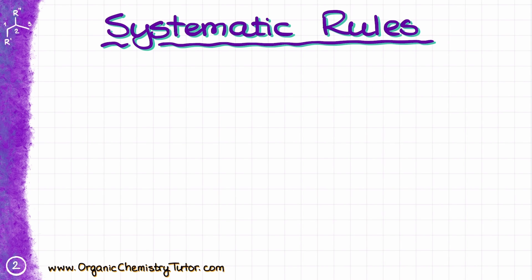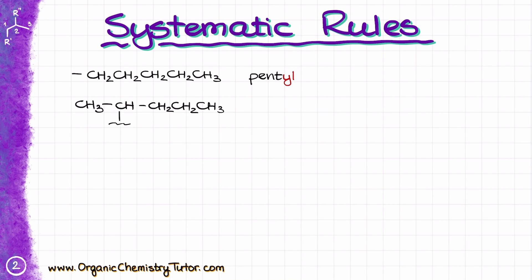So what do we do for something with five carbons or more? If I have just a straight chain, that's simply a pentyl group — nothing special. But what if the chain is connected to the parent somewhere in the middle? I think it will be easiest to illustrate how we approach those molecules using an example. Let's say I have a molecule like the one I just drew on the right.